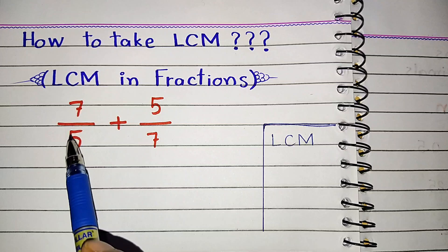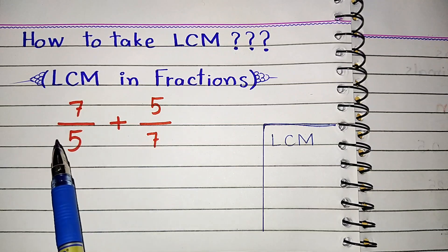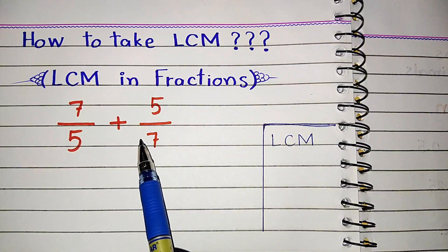We have a question here: 7 upon 5 plus 5 upon 7. First you observe the denominator. We have first denominator that is 5 and second denominator is 7.